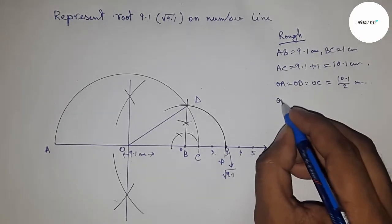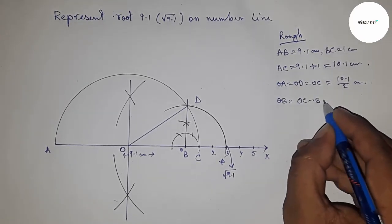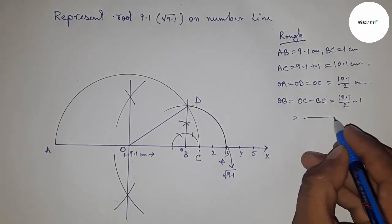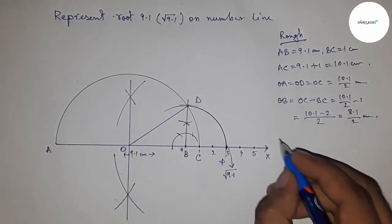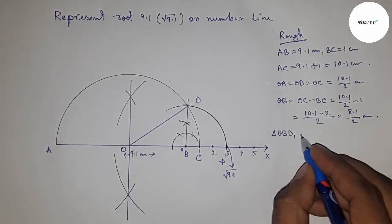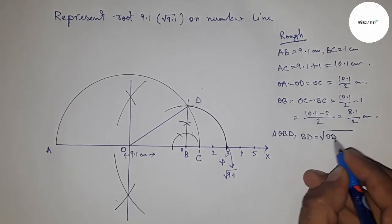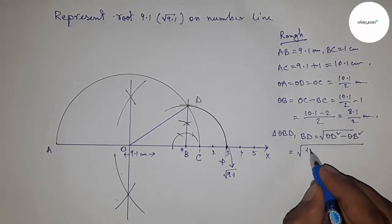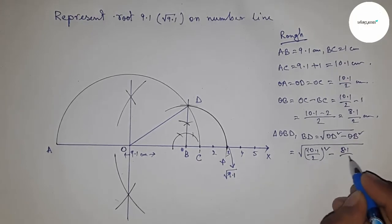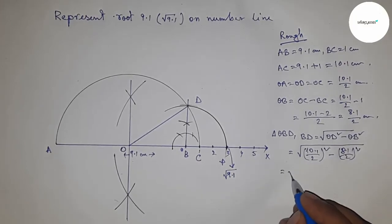OB = OC - BC. After putting the values of OC and BC and calculating, this is 8.1/2 cm. In right triangle OBD, we can write BD = √(OD² - OB²). Now put the values of OD and OB and apply the formula a² - b² = (a+b)(a-b).